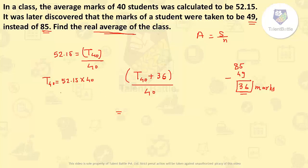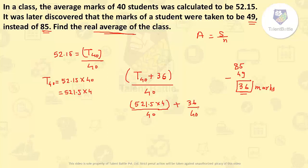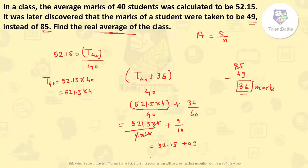To calculate: T40 = 52.15 × 40. Splitting the fraction: (T40/40) + (36/40) = 52.15 + 0.9 = 53.05. So the real average of the class is 53.05, which is the answer.